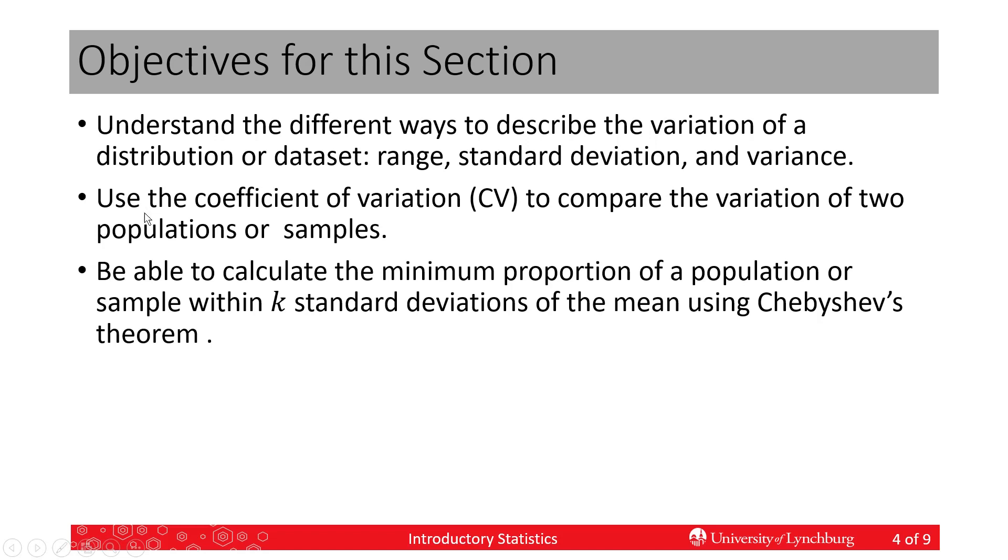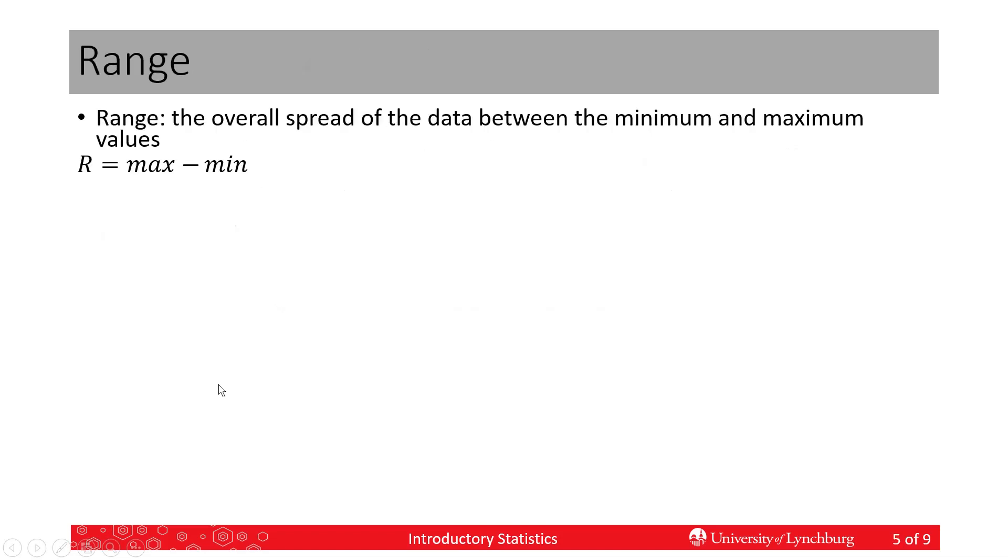This is called a measure of relative variation. We want to be able to calculate the minimum proportion of a population or sample that is within k standard deviations of the mean. This is called Chebyshev's theorem.